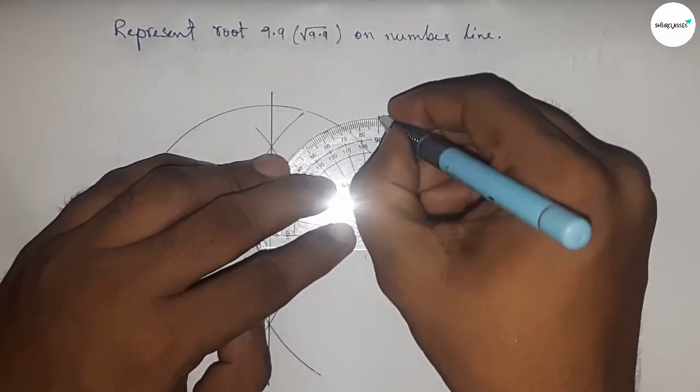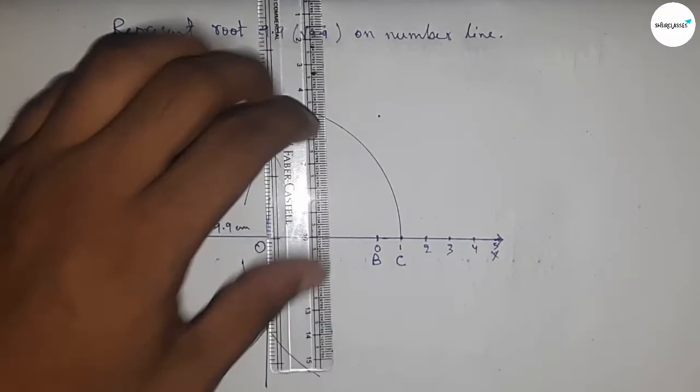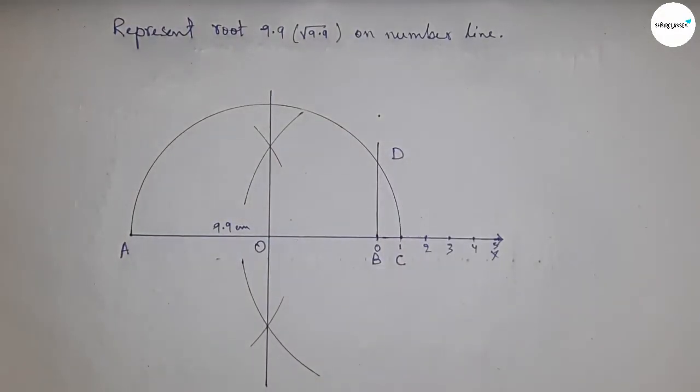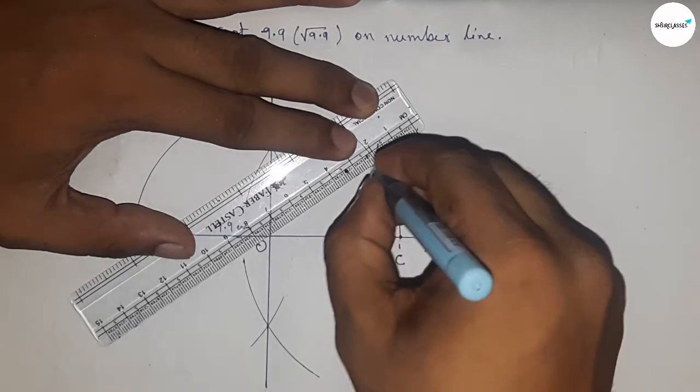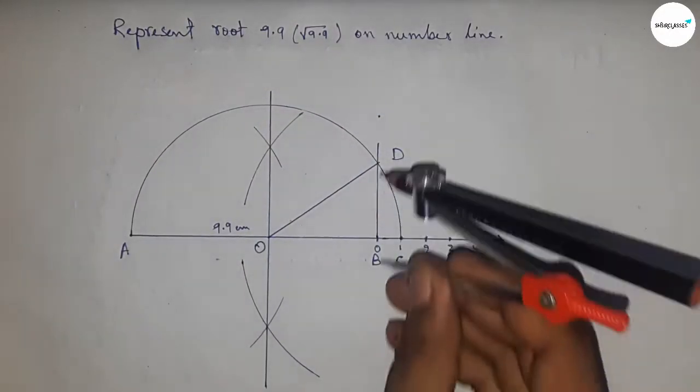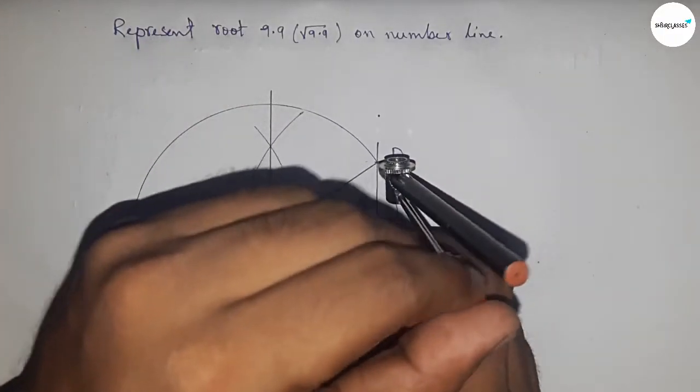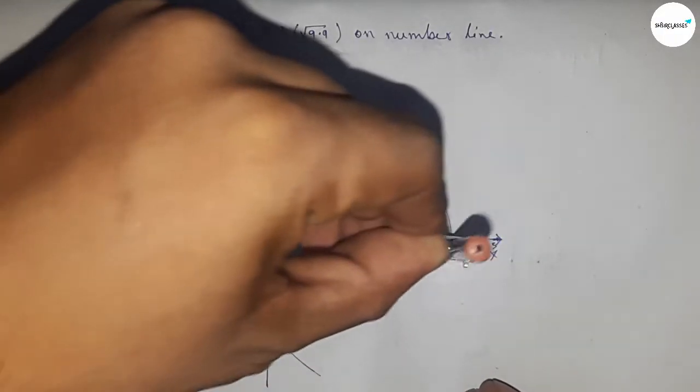Now join this which meets the semicircle at a point D. Now join O and D. Now take the length BD by compass and draw an arc which meets the number line at a point P.